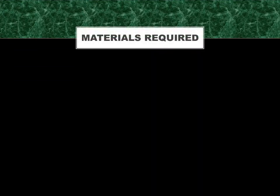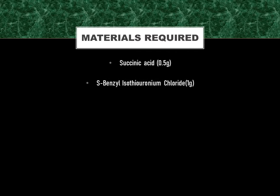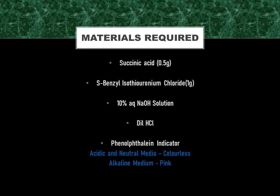The materials which will be needed to perform this experiment are: succinic acid 0.5 gram, SBT chloride 1 gram, 10% aqueous NaOH solution, dilute HCl, and phenolphthalein as an indicator. In acidic and neutral media, phenolphthalein is colorless, and in alkaline medium it is pink.